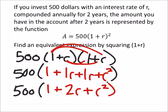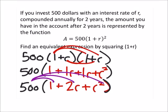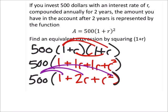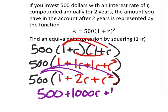And now, I'll make that black. Now I can distribute the 500 into this. So that's going to give me something a little bit different. I've got 500 plus 5 times 2 is 1,000r plus 500 times r squared will just give us 500r squared. And this is the amount A.